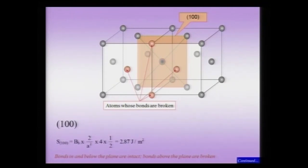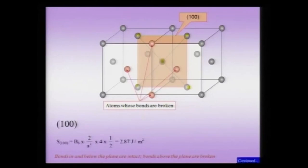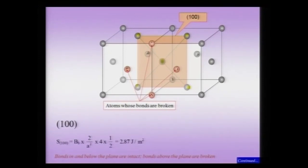Let us take the 100 surface. Consider a central atom in FCC copper — an atom at the face center — and making a cut corresponding to the orange 100 plane. Each copper atom is bonded to 12 atoms: 4 in the plane, 4 behind the plane, and 4 in front of the plane. When I make this cut, the bonds behind the plane are intact, the bonds in the plane are also intact, and all 4 bonds in front of the plane are broken. The number of bonds broken per atom is 4, with 8 intact. For the 100 surface, the surface density is 2 atoms per a² area.